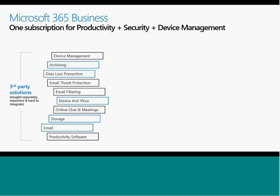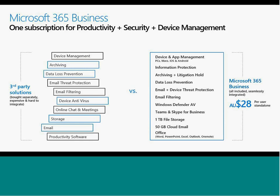The idea is to look at the stack you're using today around device management, archiving, security, and AV, and consider that Microsoft 365 Business may be able to reduce some of those requirements for third-party options while giving you additional features. The RRP price is around $28 per user. You can mix and match SKUs as required — some users can have Office 365 or just Exchange Online, and other users can have Microsoft 365 Business. It's available by CSP, very similar to the way it's always been.